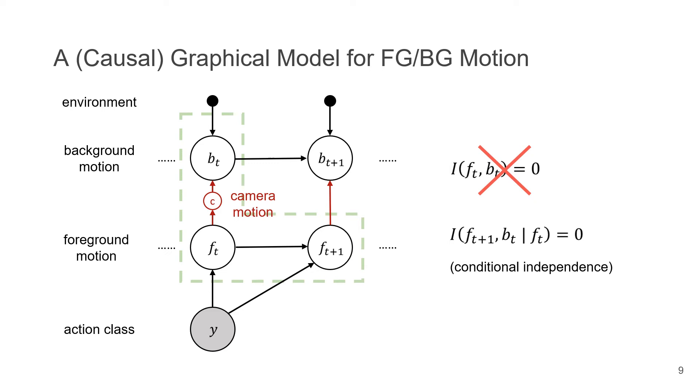But when we are recording the video, we normally move our camera to follow the foreground object. So the camera motion is only affected by the foreground, and the background will move accordingly when the camera moves. So if we see one step further, we can find that the foreground motion at t+1 frame and the background motion at t frame are independent conditioned on ft. So we can tell the conditional independence from the graph because of the v-shape structure here.